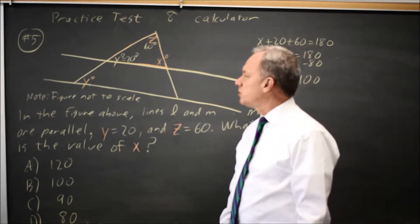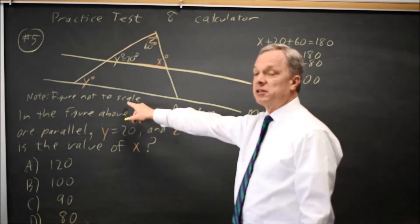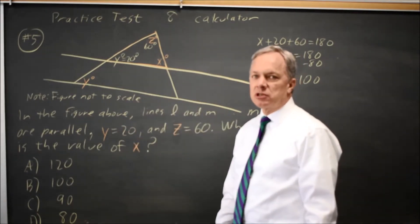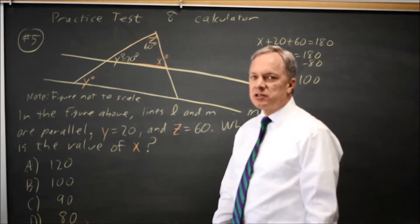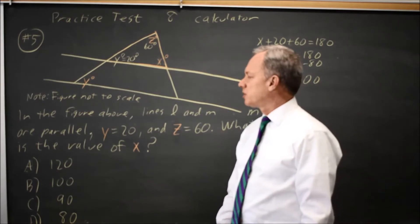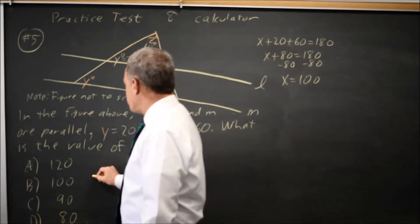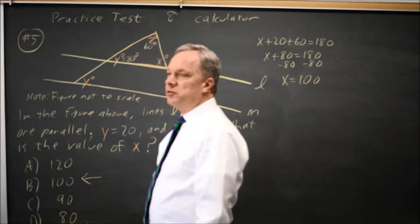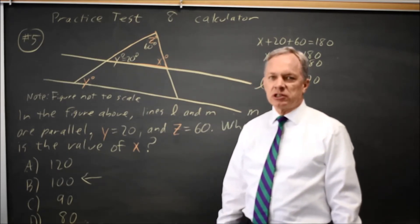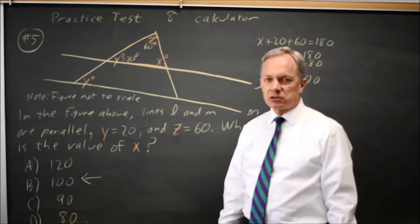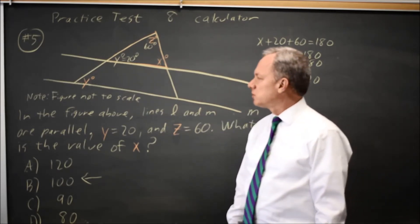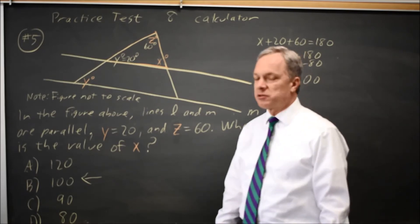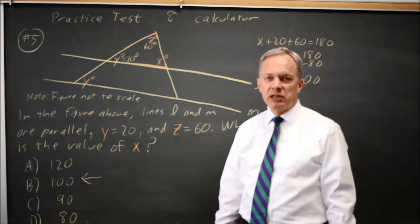It is shown as an acute angle, but they do say figure not to scale — it's important to watch for that. If they do not say figure not to scale, then the figure is to scale and you can use estimates from the figure to help rule out choices. In this case we came up with 100, which is choice B.